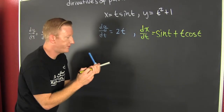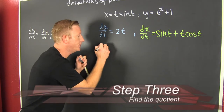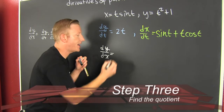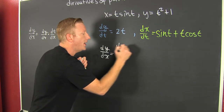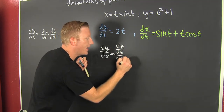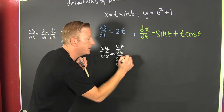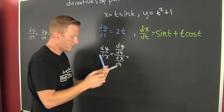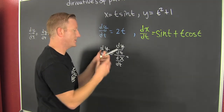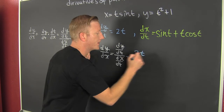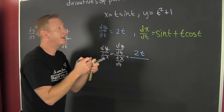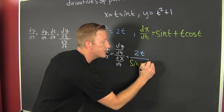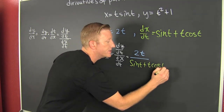So now over here, I'm looking for dy/dx. That's dy/dt divided by dx/dt, so we just put those two pieces in there. To be clear, this one is 2t divided by sine(t) plus t·cosine(t).